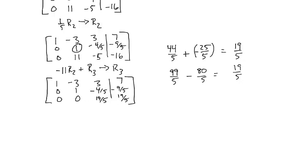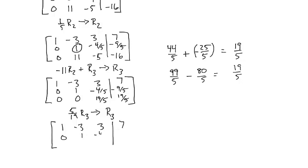Now that we have that 0, we want to create a 1 in the last piece of our diagonal. So we do 5/19 times row 3 and put it back in row 3. Rows 1 and 2 don't change. The two zeros stay 0, and 5/19 times 19/5 is 1, giving us a 1 in the corner. We can see that z is equal to 1. Now we need to get zeros where negative 4/5 is and where 3 is.